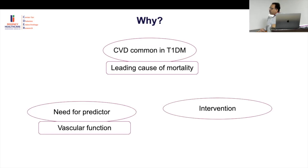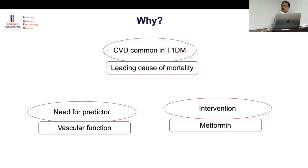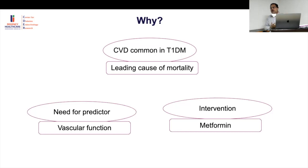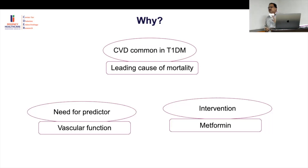The intervention is clear — using metformin to improve vascular function, not claiming direct impact on CVD, but implying that improving vascular function now predicts future benefit. This is analogous to using bone resorption markers as an early surrogate for BMD response to anti-resorptive agents — you can't wait for the long-term endpoint, so surrogate markers are used.